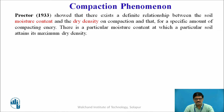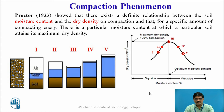The compaction has been first studied by Proctor in 1933 and he showed that there exists a definite relationship between the soil moisture content and dry density for a specific amount of compacting energy. This compaction curve can be obtained in the laboratory with the help of certain experiments such as the standard Proctor test and modified Proctor test.